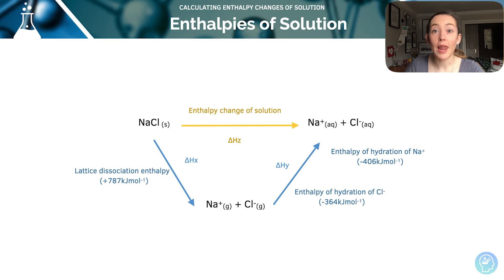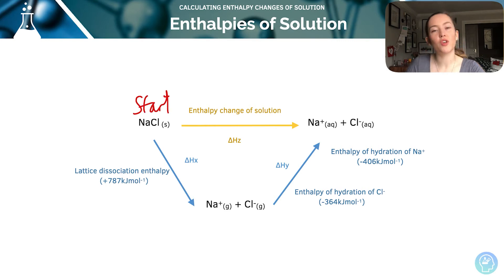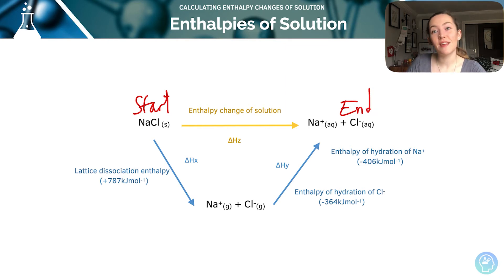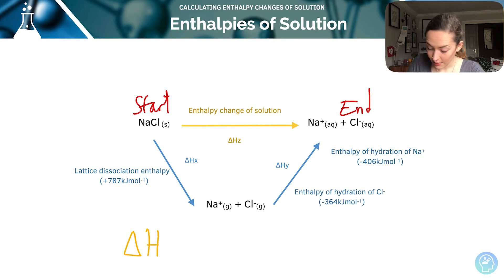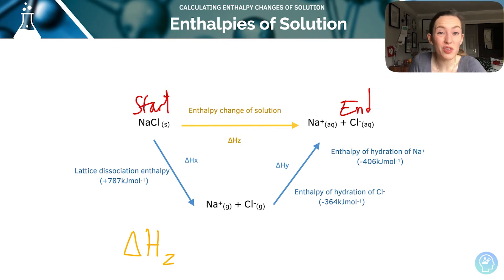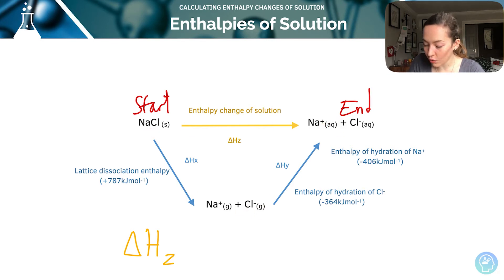When calculating these kinds of cycles, I like to establish where the start and the end of the cycle is. The start is where I've got two arrows pointing away, and the end is where I've got a compound with two arrows pointing to it in the route. Here's my end, and I can see a very direct route to calculate the enthalpy change of solution from the start to the end. I can take the direct route, or I can take a long route — remember Hess's law? The overall enthalpy change is the same, independent of the route taken.